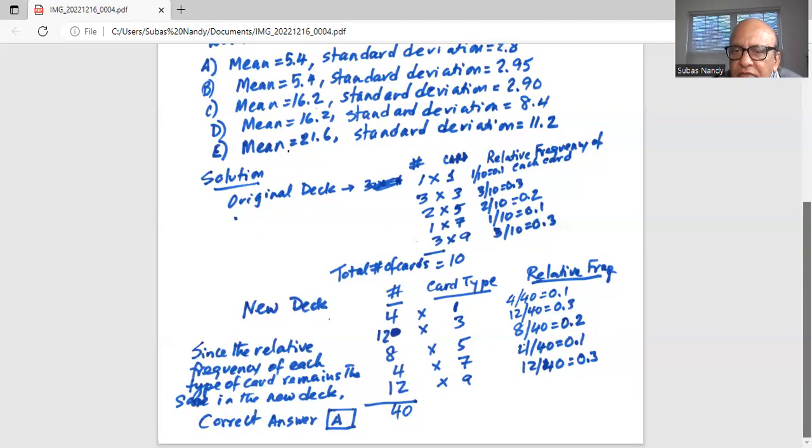Now look at the relative frequency of each card. For number 1 it is 4 out of 40, which is 0.1. For number 3 it is 12 out of 40, or 0.3. For number 5 it is 8 out of 40, or 0.2. For card 7 it is 4 out of 40, which is 0.1. And for 9 it is 12 out of 40, or 0.3.